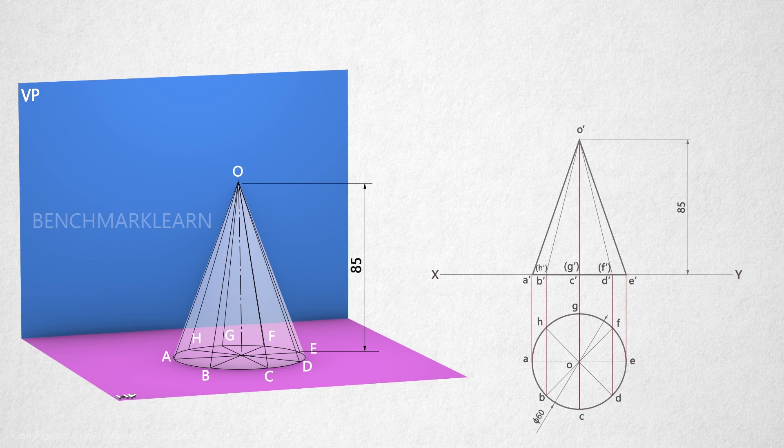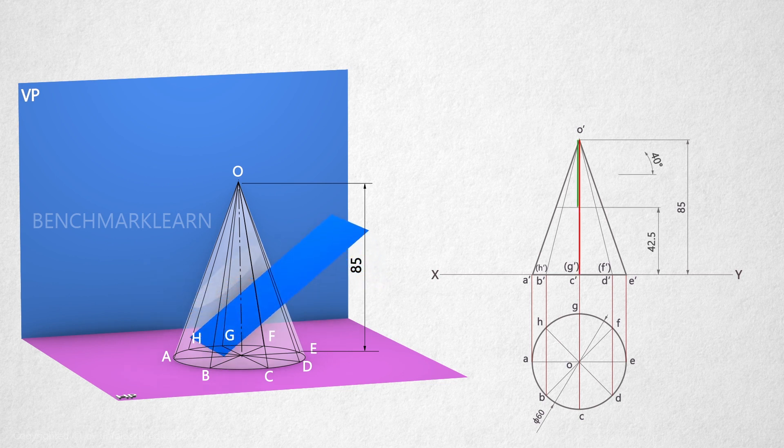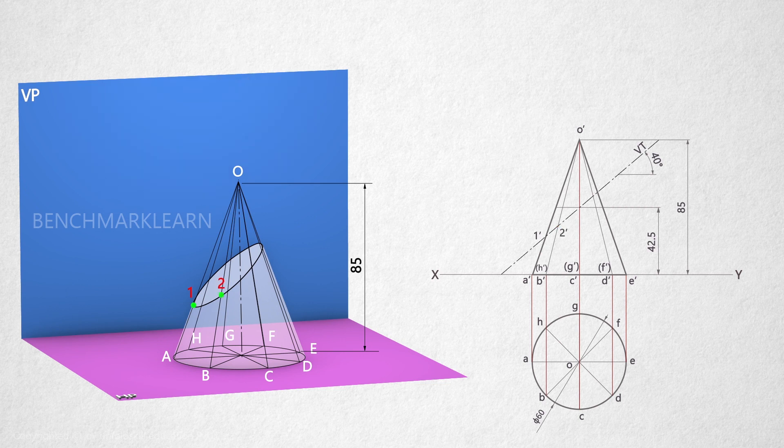Draw the VT of the cutting plane bisecting the axis of the cone at an angle of 40 degrees. Here A'O' is cut at point 1', B'O' is cut at point 2', C'O' is cut at point 3', D'O' is cut at point 4', E'O' is cut at point 5', F'O' is cut at point 6', G'O' at 7', and H'O' at 8'.